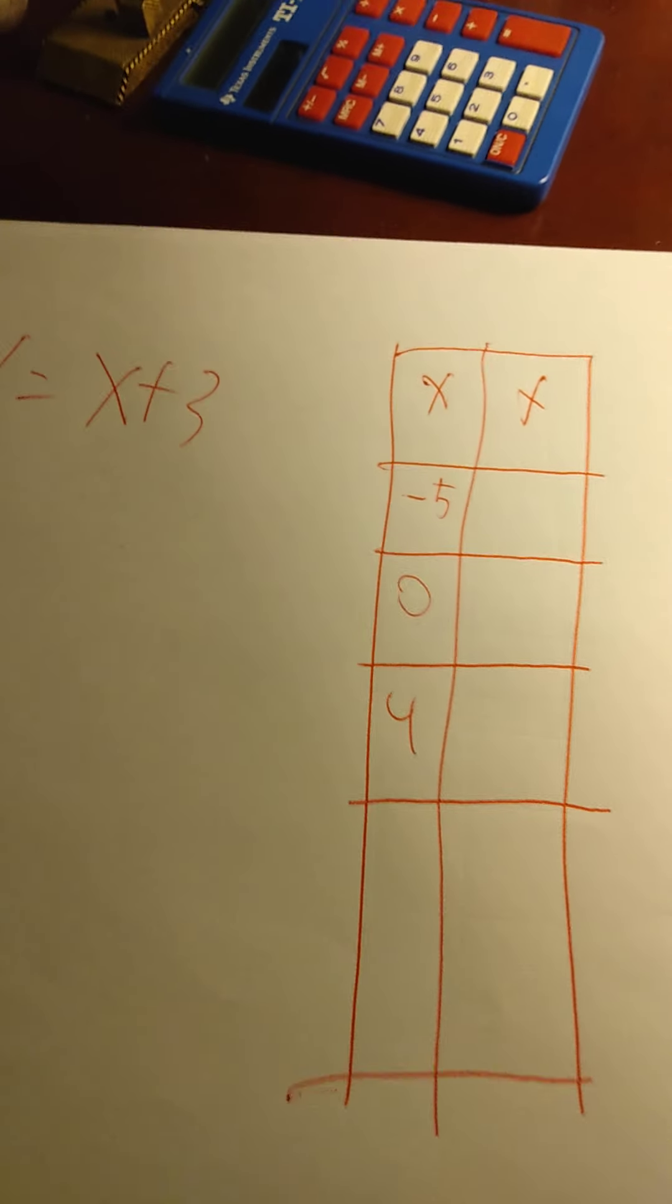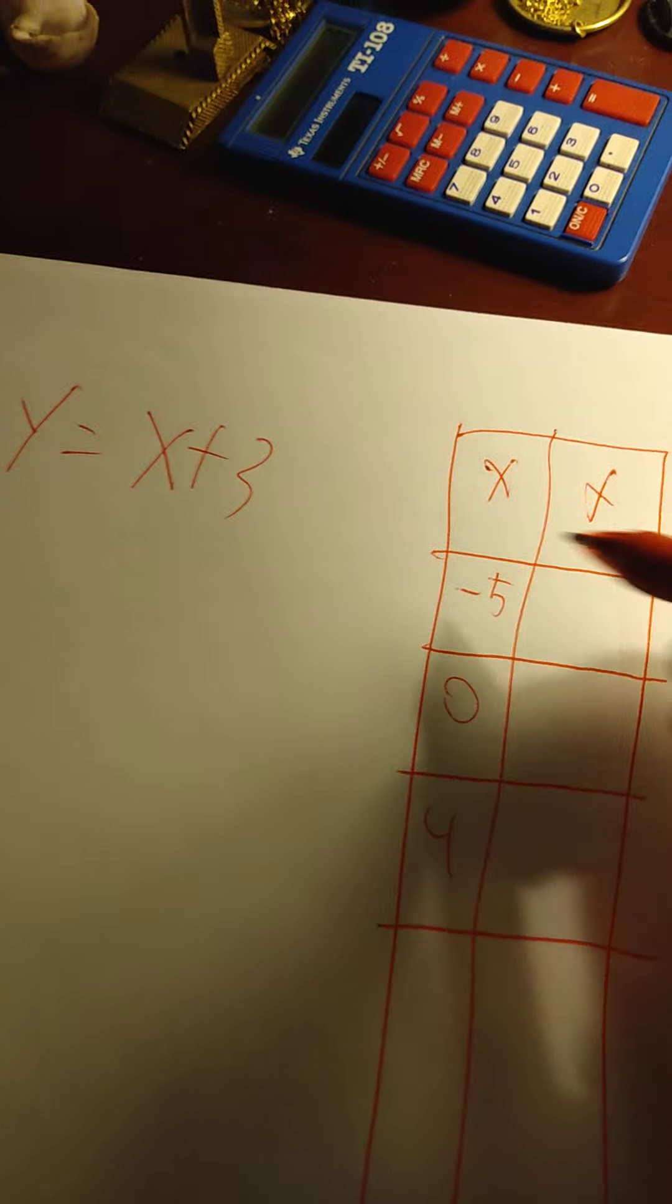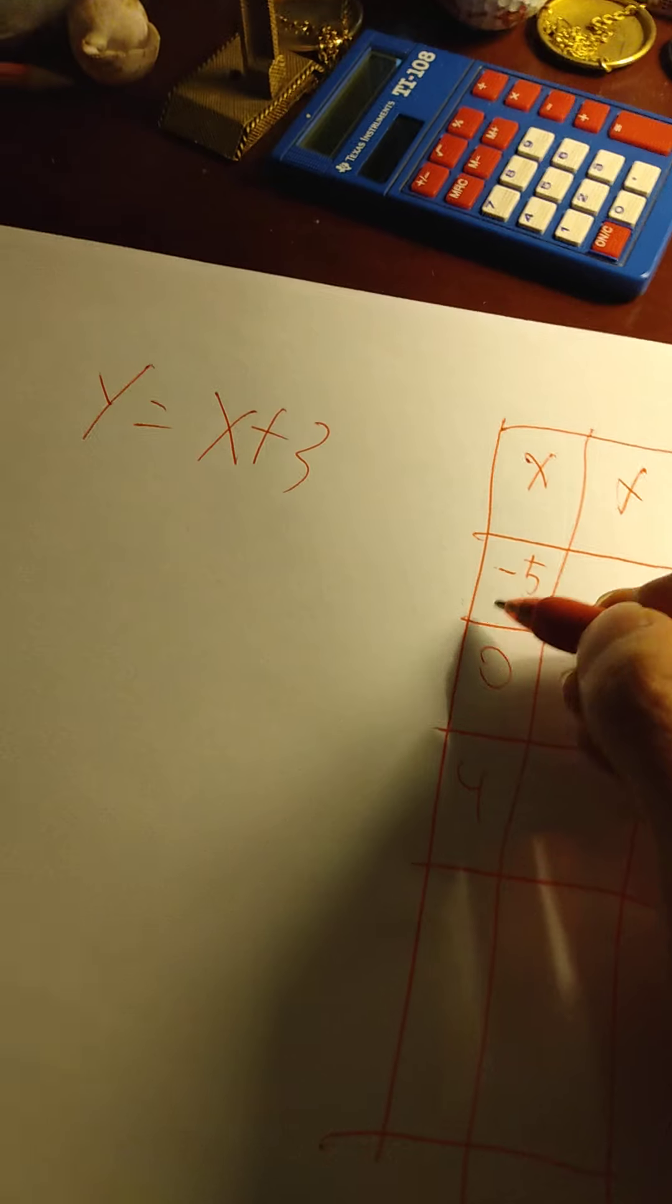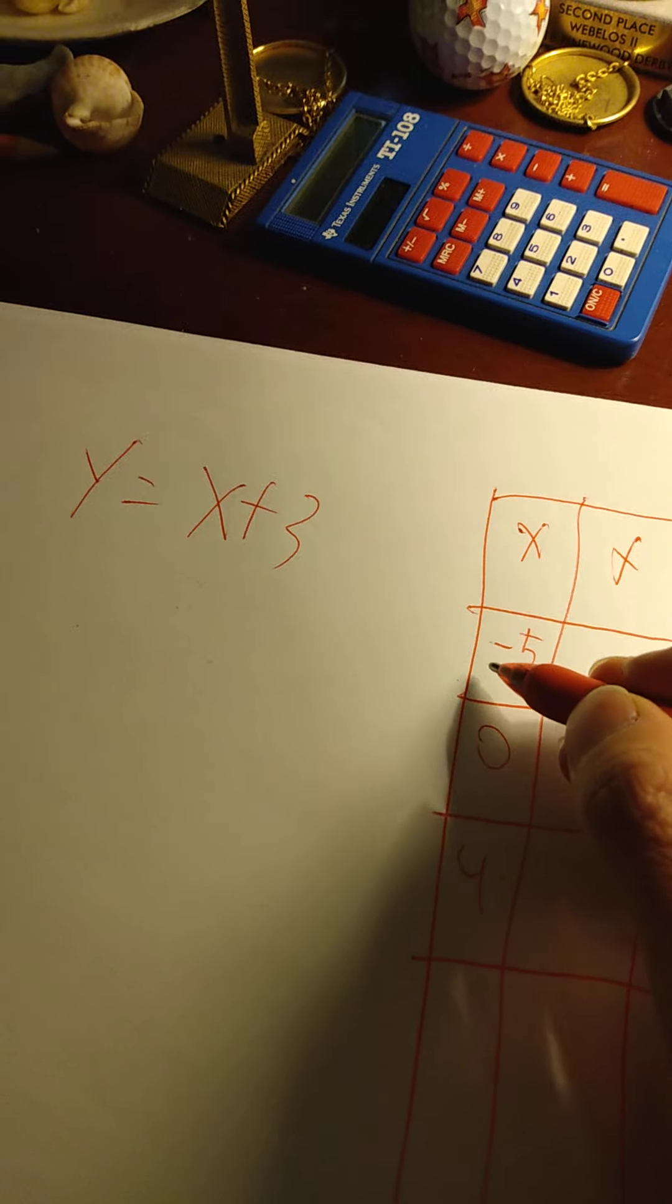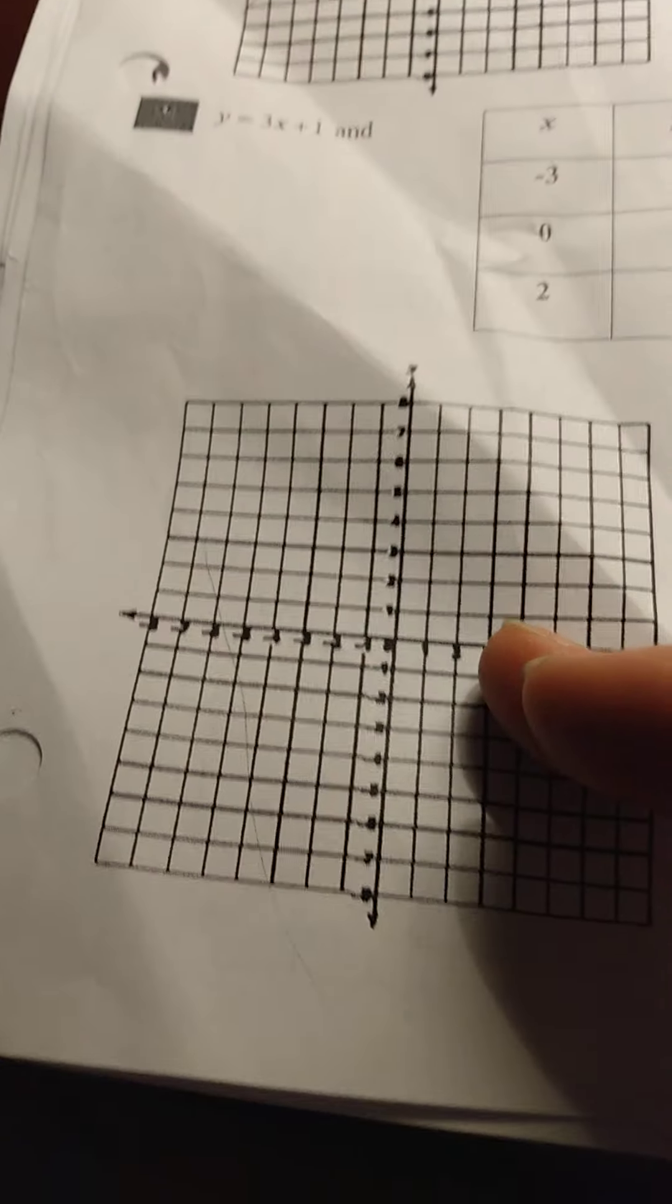But the problem is, this problem is saying if x is negative 5, what is y? So the problem is saying x must be negative 5. So we're going to be making a slope on this graph right here.